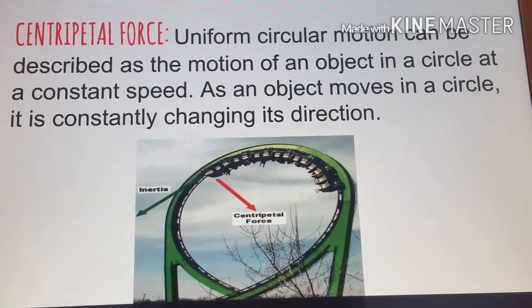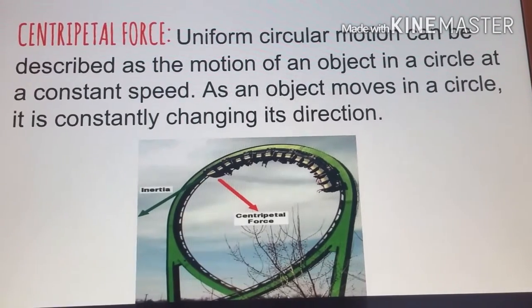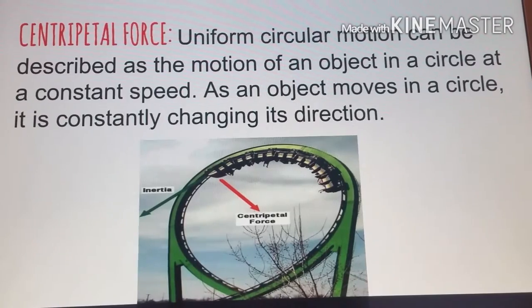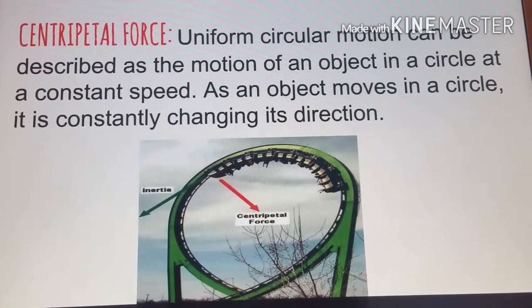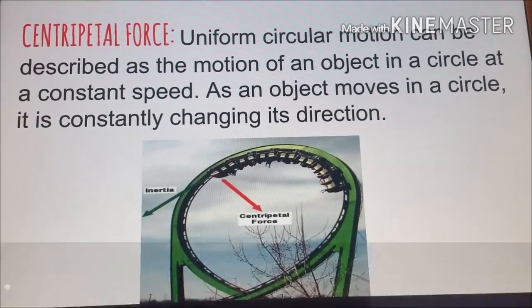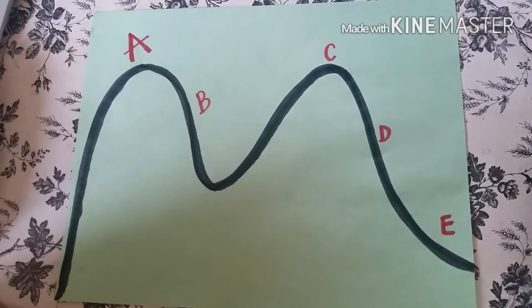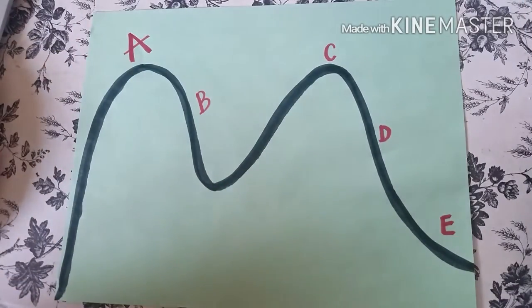The centripetal force, uniform circular motion, can be described as the motion of an object in a circle at a constant speed. As an object moves in a circle, it is constantly changing its direction. Now that we got a brief explanation of what kinetic energy is and potential energy...